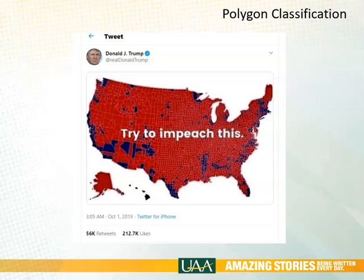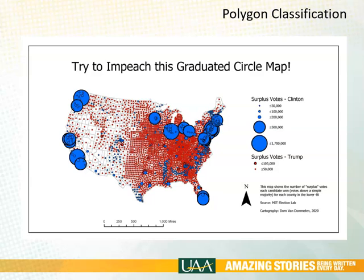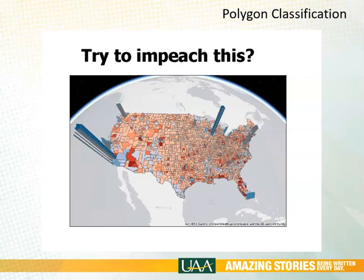One of the important things to note, though, is that there are some errors in that map. So I actually took it upon myself to make a more sophisticated version — instead of just using single colors, I used graduated colors representing the density of votes for either President Trump or Secretary Clinton. This map uses graduated circles to show the surplus number of votes for Secretary Clinton versus the surplus votes in any particular county for President Trump — a different way to symbolize the same data. This version uses a combination of polygon and point data, and finally there is a map showing the same thing using a three-dimensional representation.